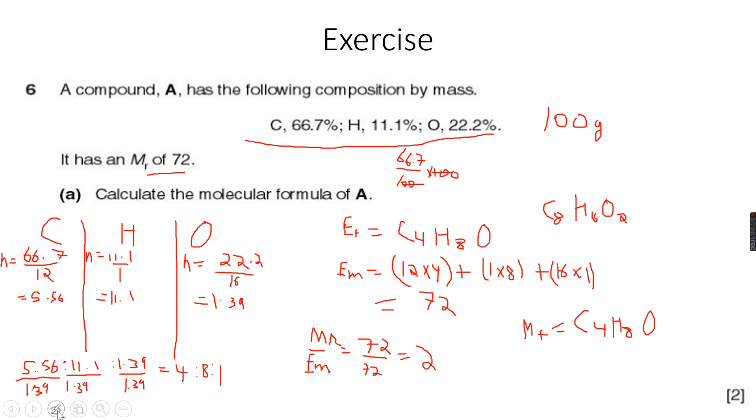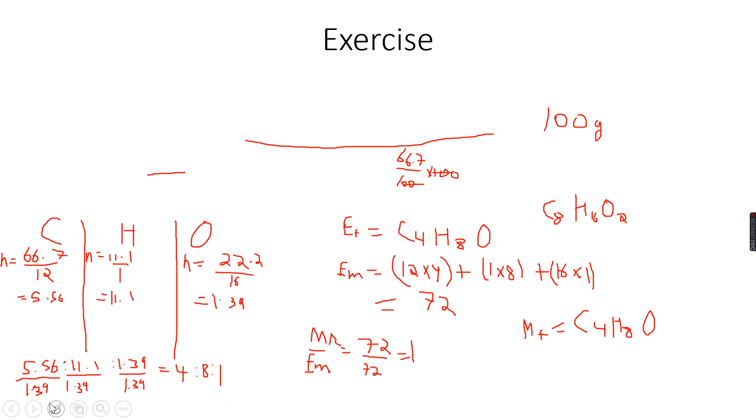Depending on what this ratio is, we multiply that with the empirical formula to get the molecular formula. In this case, it was 1. So the empirical formula times 1 is the empirical formula itself. So the empirical and molecular formula are the same. Now let's do another example.